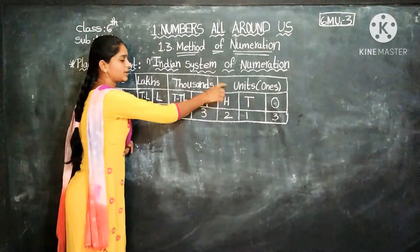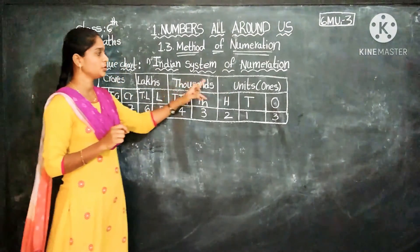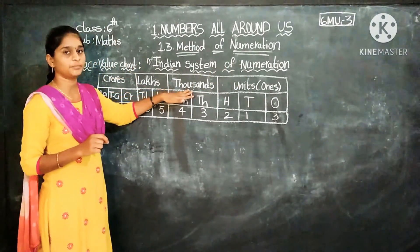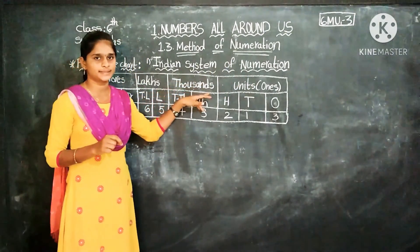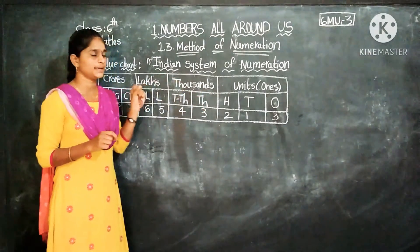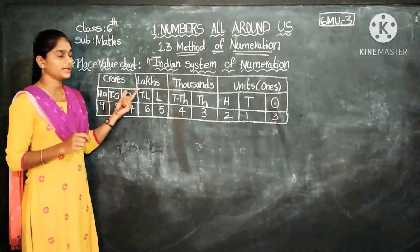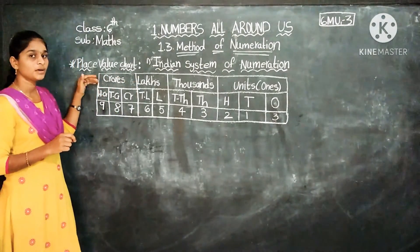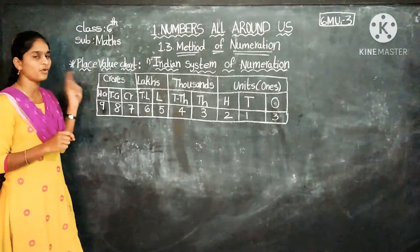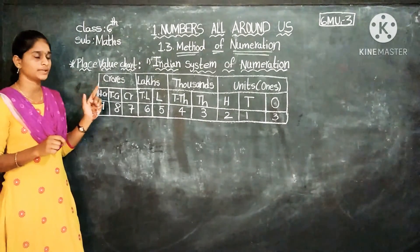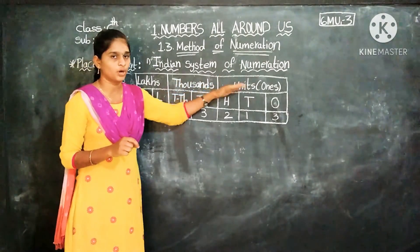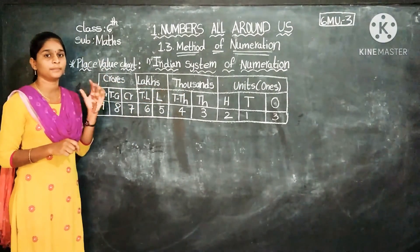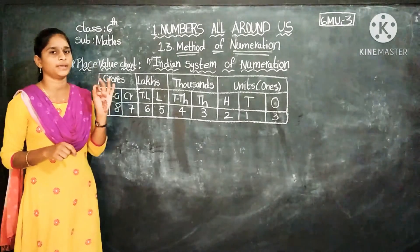The first period is Units, which are Ones. The second period is Thousands. The third period is Lakhs. And the fourth period is Crores. Units, Thousands, Lakhs, and Crores are called periods.